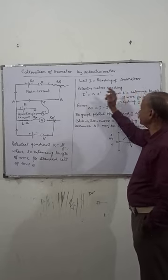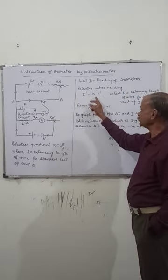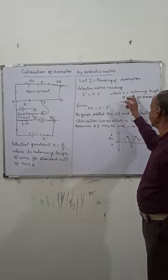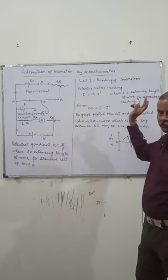Let I equal to reading of the ammeter. So, potentiometer reading I' = KL' where L' is the balancing length of the wire for ammeter reading I.